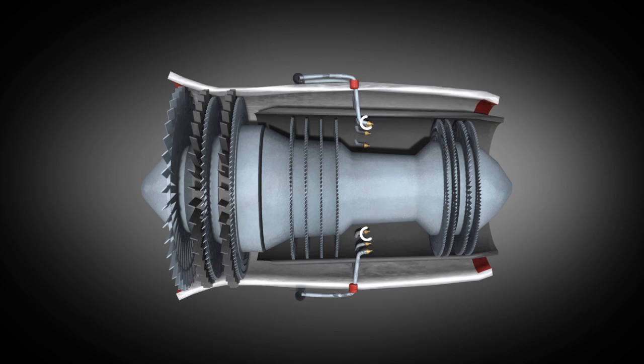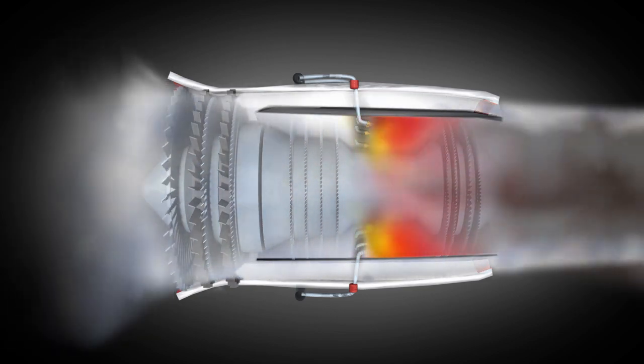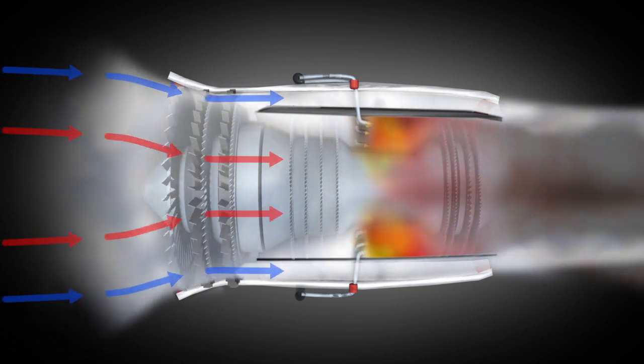Now, let's take a closer look at the entire process. The air is sucked in from the front into the turbine by the blades of the rotors, accelerated and compressed thanks to the stators. The air is then divided into a bypass airflow, marked in blue, and a core flow, marked in red.